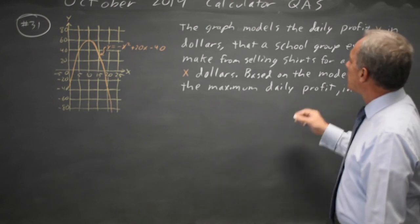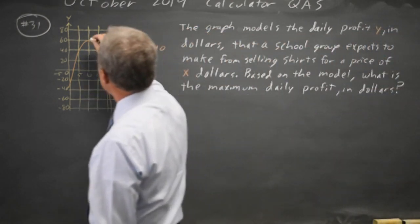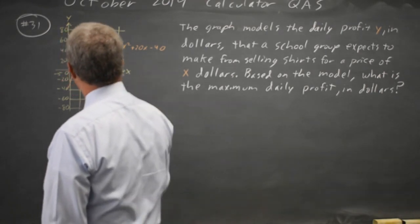They're asking for the maximum daily profit where this graph, this function, is the profit. We can look at the graph and the maximum appears to be at 60.